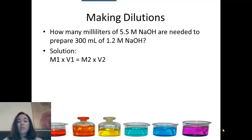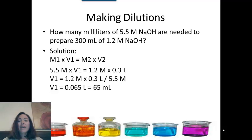The M's remember are the molarities, and the V's are the volumes. All you've got to do is make sure you pair together the correct molarity with its volume. Now I know that the 5.5 molar is the solution I'm starting with, and I need to know how much of it to use. So that's my M1 and my V1 is unknown.